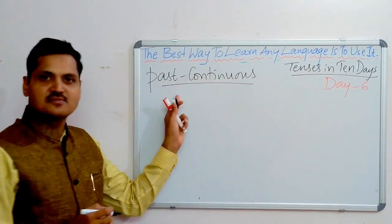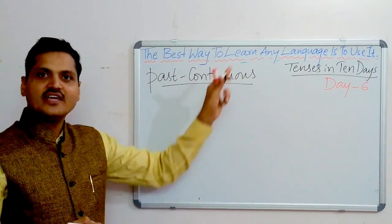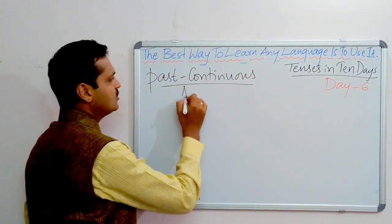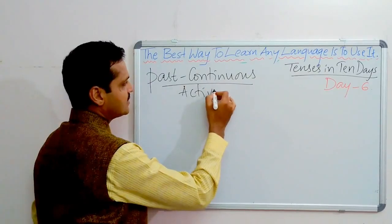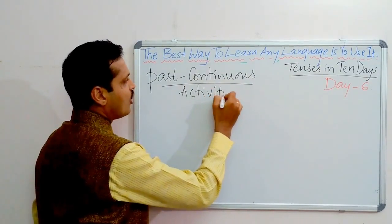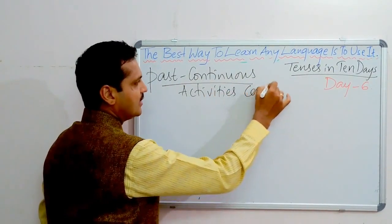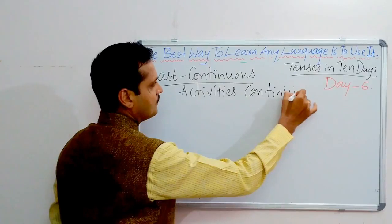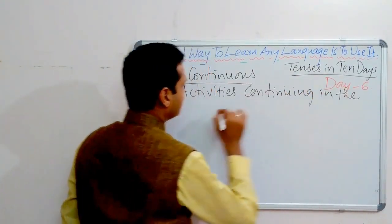Past continuous means activities continuing in the past. We use past continuous tense for all the activities continuing in the past.